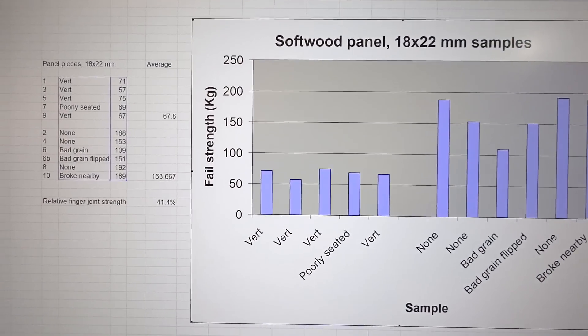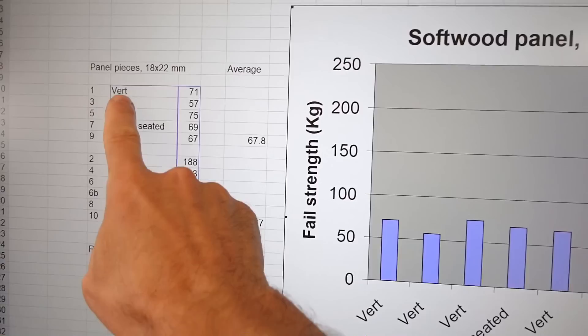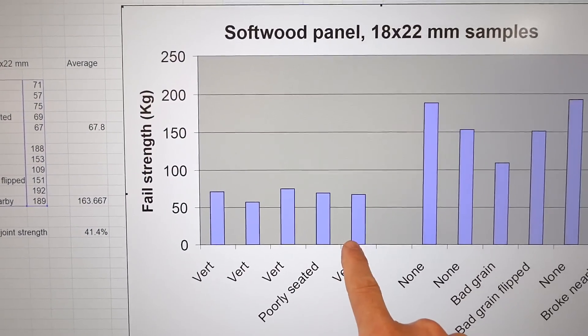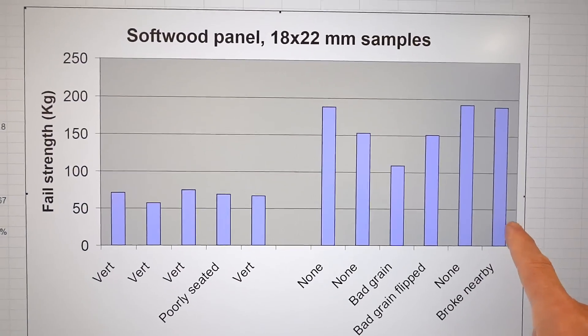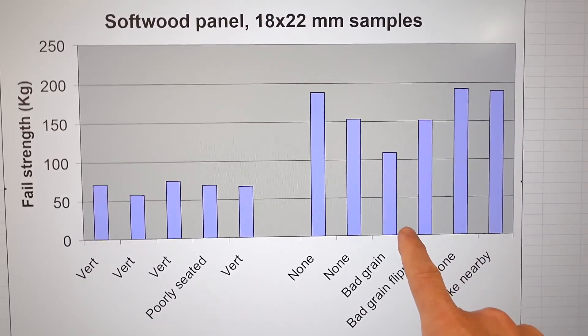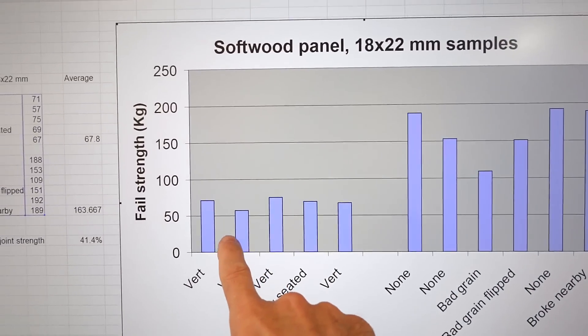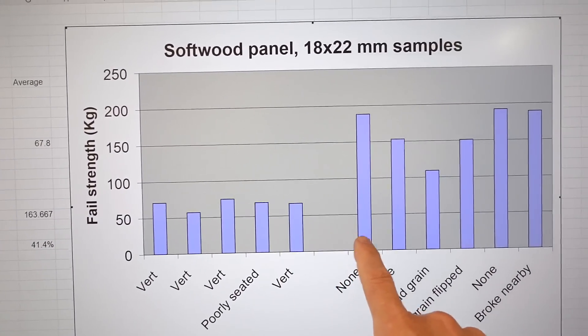Because these samples were rectangular I only tested them in the vertical direction, that is the finger joint is actually vertical. These are the joints and these are the solid pieces including the one with the bad grain. This one did worst of all, with these only on average about 40% the strength of these.